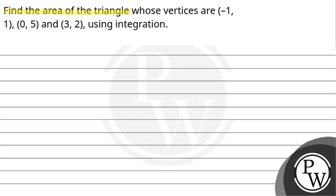Let's read the question. Find the area of the triangle whose vertices are (-1, 1), (0, 5), and (3, 2) using integration.